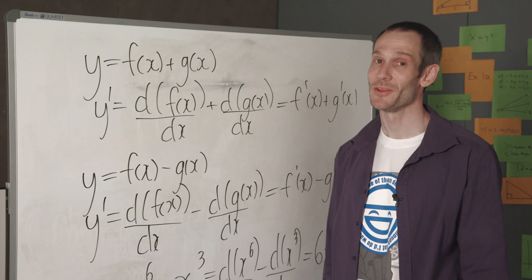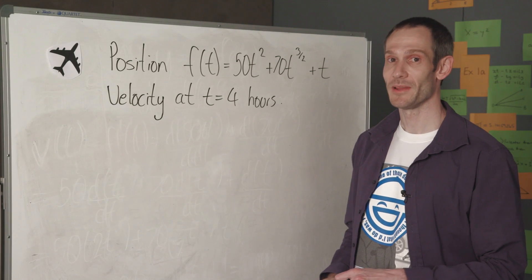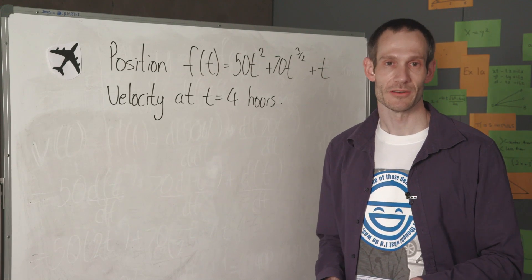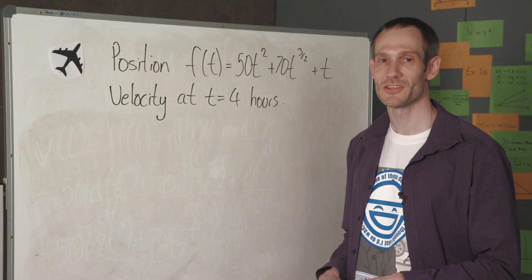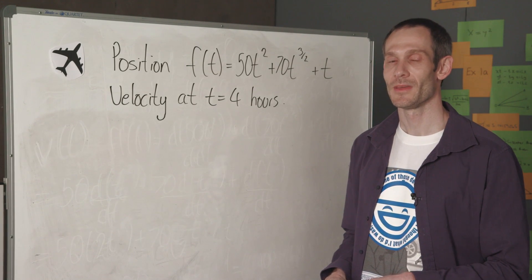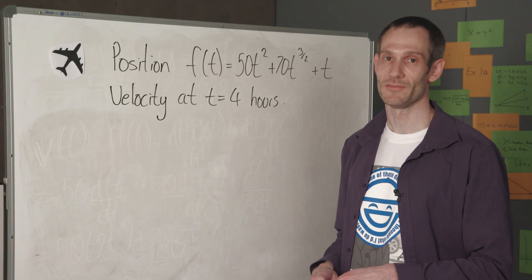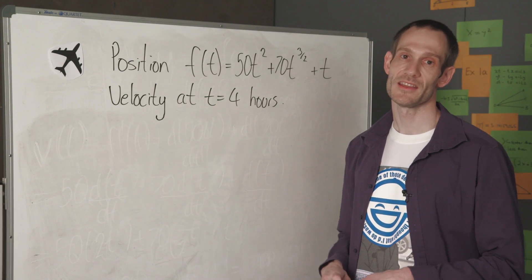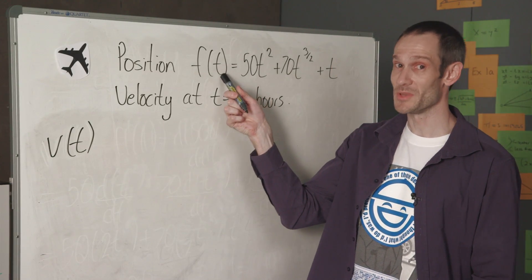So now let's return to our original problem of determining the velocity of the plane after four hours. In this problem, we were told what the position of the plane was, and I want to work out the velocity of the plane after the fourth hour. The derivative of a function can be interpreted as the instantaneous rate of change. If you are told what the position of an object is at time t, the instantaneous rate of change of position tells us the velocity. So if I differentiate the position equation, the result gives me the velocity equation.